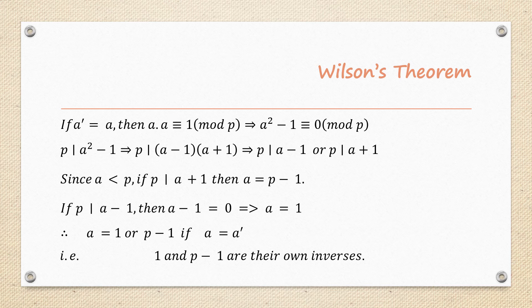Expanding: if P divides (A-1), we can write A - 1 = 0, so A = 1. If P divides (A+1), then A = P-1. Therefore, when A' = A, we get A = 1 or A = P-1. This means 1 and P-1 are their own inverses modulo P.